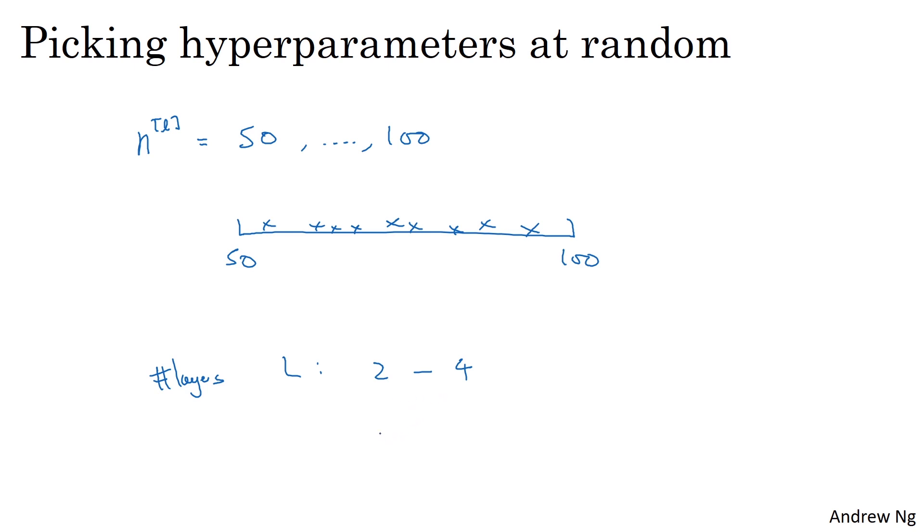Or if you're trying to decide on the number of layers in your neural network, we're calling that capital L, maybe you think the total number of layers should be somewhere between two to four. Then something uniformly at random among two, three, and four might be reasonable. Or even using a grid search where you explicitly evaluate the values two, three, and four might be reasonable. So these were a couple examples where sampling uniformly at random over the range you're contemplating might be a reasonable thing to do.